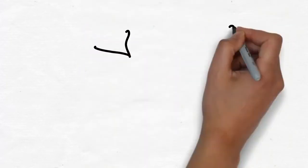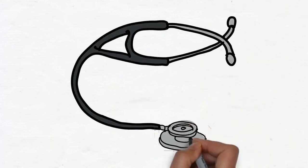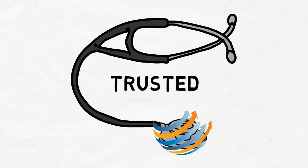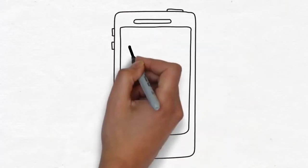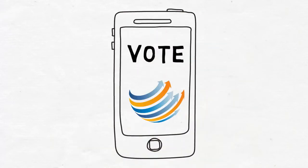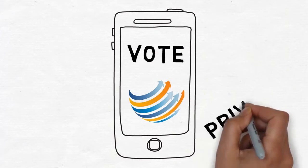In a Factom world, you alone would own your medical records and share them only with doctors you trust. In a Factom world, you could cast your vote from anywhere, once and only once, and that vote would be ultra secure and private.